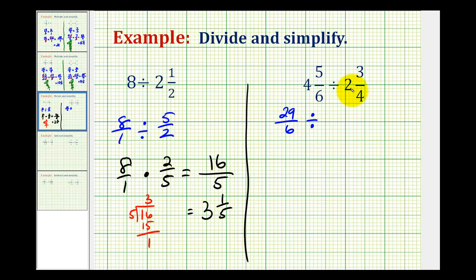Divided by, here we'll have 4 times 2, that's 8, plus 3, that's 11 fourths. Now instead of dividing by this fraction, we'll multiply by the reciprocal. So this division problem is equivalent to 29 sixths times 4 elevenths.